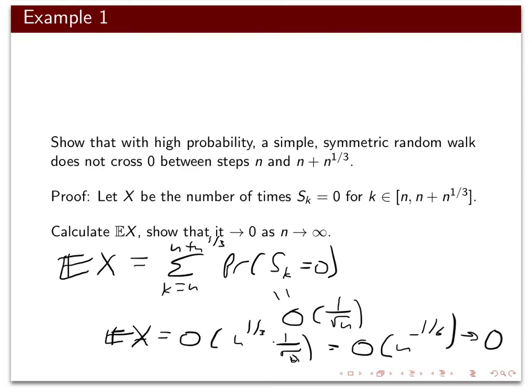We've shown that the expected number of times the simple random walk crosses zero in this interval tends to zero as n goes to infinity. Therefore, applying Markov's inequality, we conclude that with high probability the number of crossings is zero in that interval. That's the first moment method.